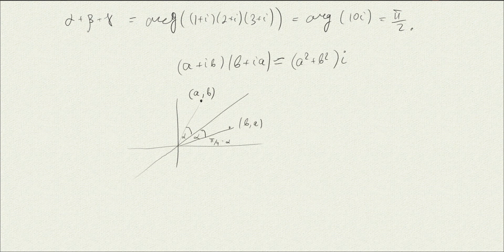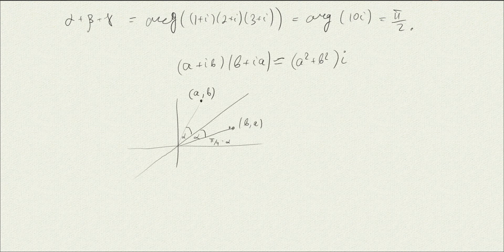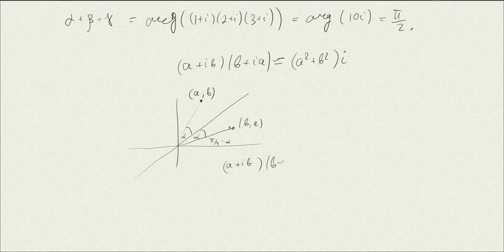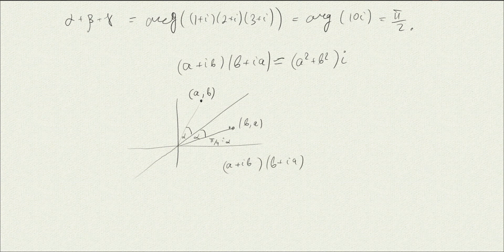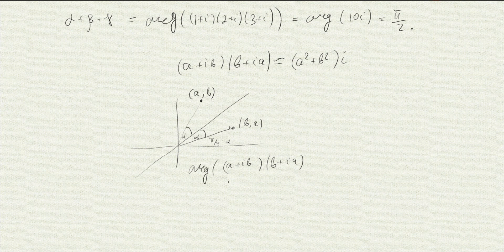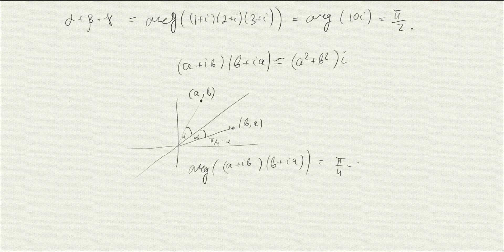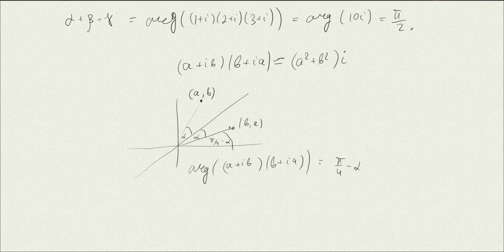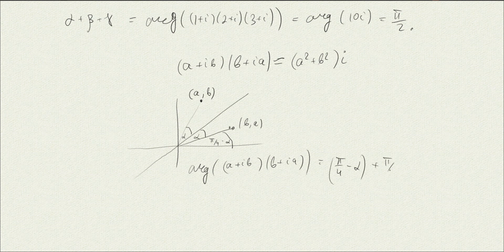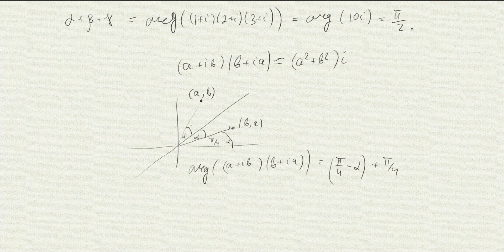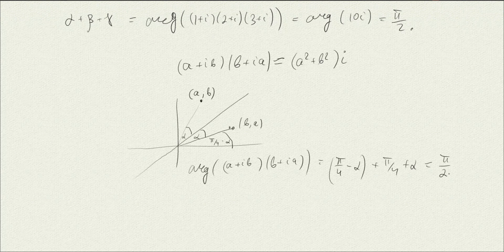And then when we multiply those two numbers, when we multiply a plus ib times b plus ia, then the argument of this is going to be the argument, it's a quarter of pi minus alpha, it's the argument of this number, and then the argument of this is actually pi quarter minus alpha plus alpha plus alpha, so it's plus alpha, and as a result, we get pi half.